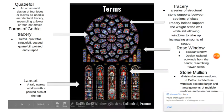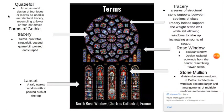All these elaborate designs would be tracery. There are different types of tracery — the four-leaf clover-looking shape is called a quatrefoil. It looks like four loaves or leaves, and is used as architectural tracery resembling a flower or clover. Some other types of tracery are the trefoil, quatrefoil, cinquefoil, cusp quatrefoil, pointed, and cusp.